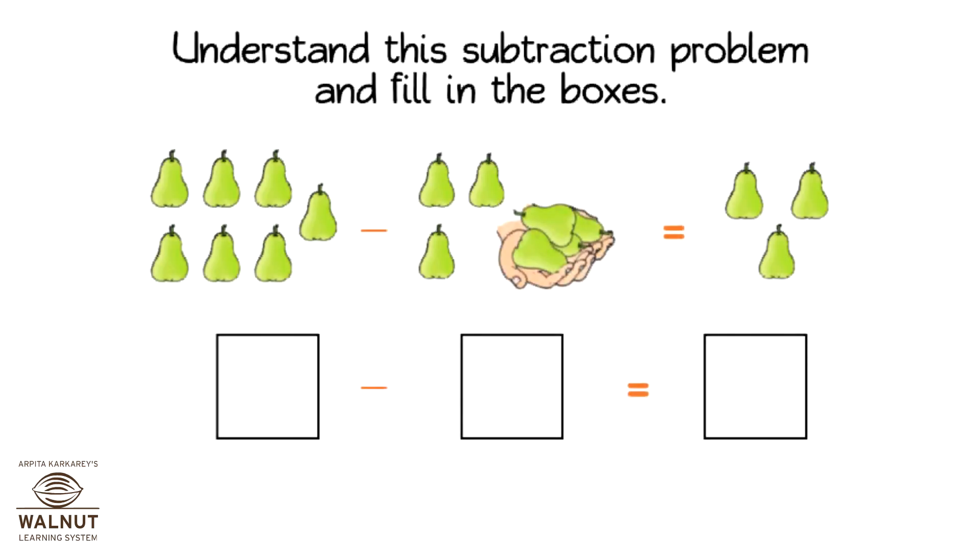There are 7 pairs. I took away 4 pairs. How many pairs left? 7 minus 4 is equal to 3.